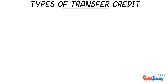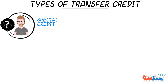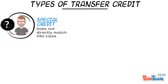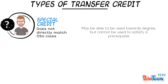Another type of transfer credit is special credit. This is credit that we know does not match up directly with any course here at Ohio State. These credits might still be useful towards your degree, but cannot be used to satisfy a prerequisite for a higher course here at Ohio State. These credits are designated as S000.